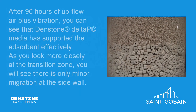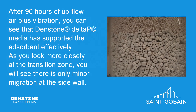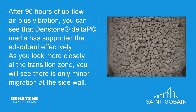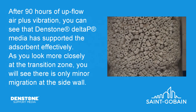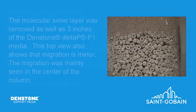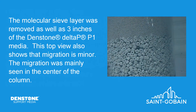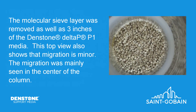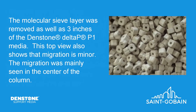After 90 hours of upflow air plus vibration, you can see that Dentstone Delta P media has supported the adsorbent effectively. As you look more closely at the transition zone, you will see there is only minor migration at the sidewall. The mole sieve layer was removed as well as three inches of the Dentstone Delta P P1 media. This top view also shows that migration is minor, and was mainly seen in the center of the column.